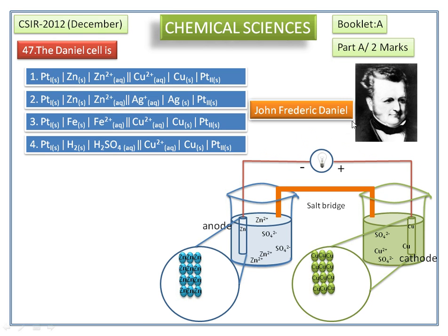This is called the zinc anode. This is called the copper cathode. In the zinc anode, zinc atoms are regularly arranged. Here you can see the regular arrangement of copper. When the connections are completed, zinc metal is oxidized into Zn²⁺ ions and 2 electrons. These 2 electrons move from anode to cathode, where reduction of Cu²⁺ ions takes place. Here, Cu²⁺ ions are reduced to copper which is deposited on the copper electrode.